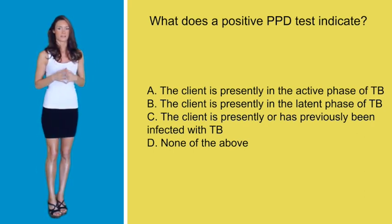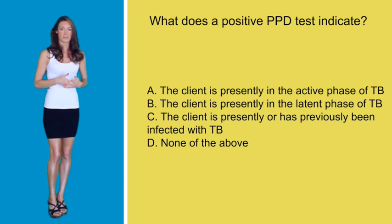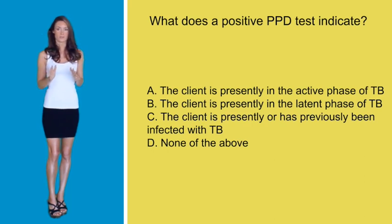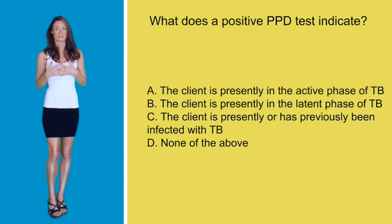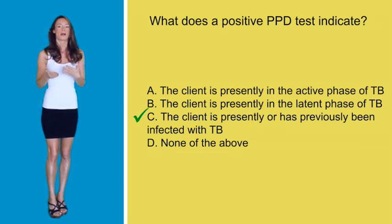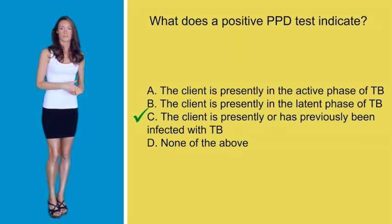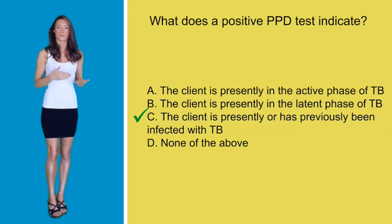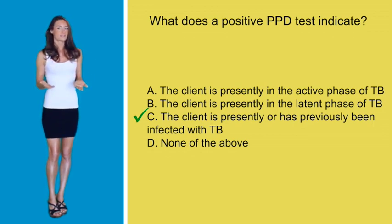A positive PPD does not distinguish between active or latent TB disease. It only indicates that the person is presently or has previously been infected with tuberculosis bacteria. The next step would be additional tests such as a chest x-ray and a sputum sample.